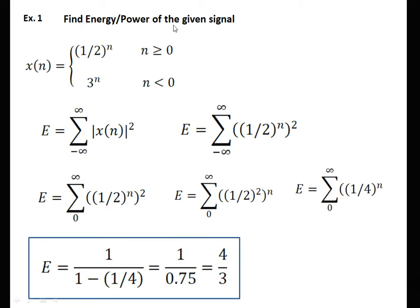Example 1: Find energy and power of the given signal. The signal is given and divided into two parts. For the positive part, this is the signal, and for the negative part, this is the signal. First, we solve for the positive part. This is the formula for energy — summation from minus infinity to infinity of |x[n]|². We put the value of x[n] as (1/2)^n since it is on the positive side.